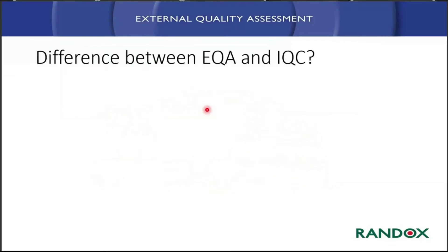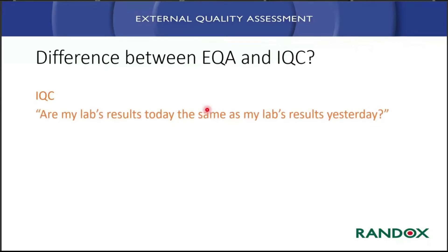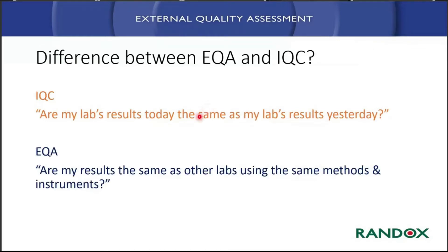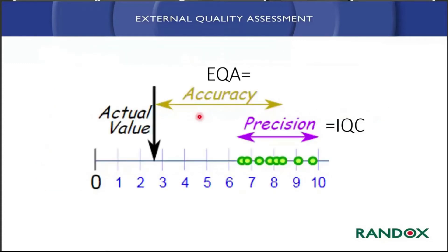What's the main difference between our EQA and IQC? This may be basic for some of you, but it's just really a reminder of the main differences. Your internal QC asks: are my results today the same as they were yesterday — is my system still within control as far as precision is concerned? With external quality assessments, we're looking to see: are the results the same as other labs using the same method and instruments? Your EQA is a determination of your bias or your accuracy; your internal QC is your precision.